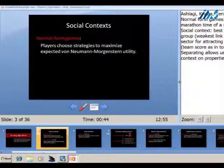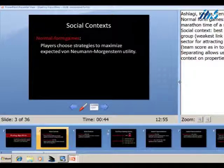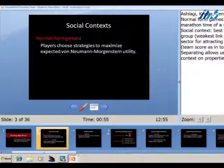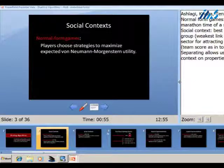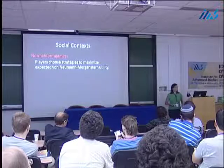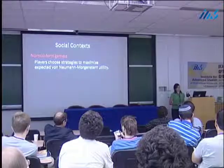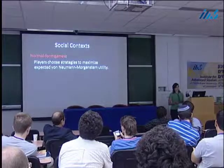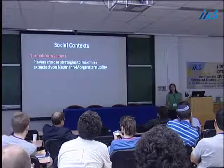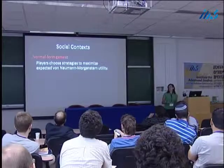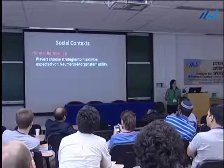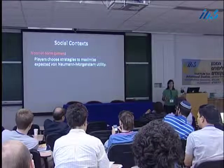Let me start the talk by discussing normal form games, which we all know and love. In a normal form game, we have players that choose strategies in order to maximize their expected von Neumann-Morgenstern utilities. You can imagine somebody that wants to run a marathon choosing their training schedule in order to get the best possible time, or a biker in the Tour de France choosing their training schedule to get the best possible time.